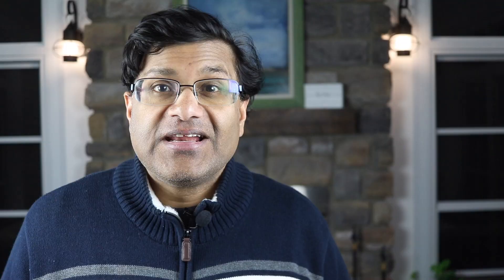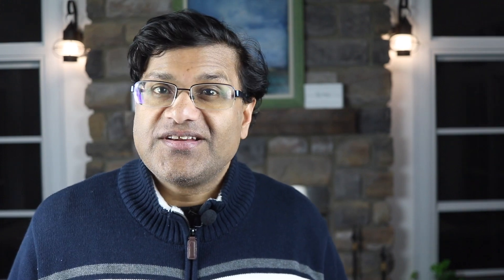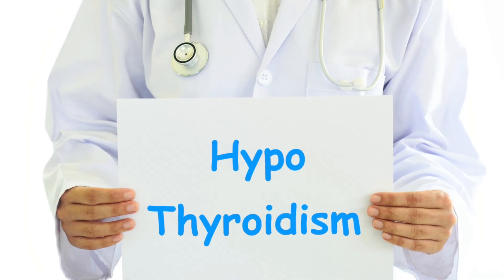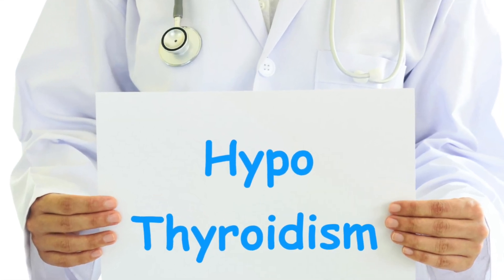What is levothyroxine? Levothyroxine is used to treat your underactive thyroid. When your body is not making enough thyroid hormone, levothyroxine replaces a thyroid hormone in your body. This condition is also known as hypothyroidism.